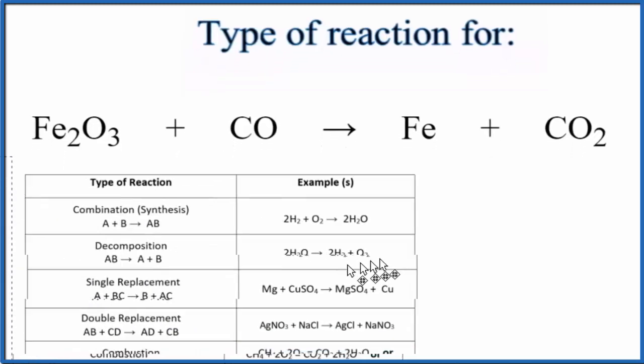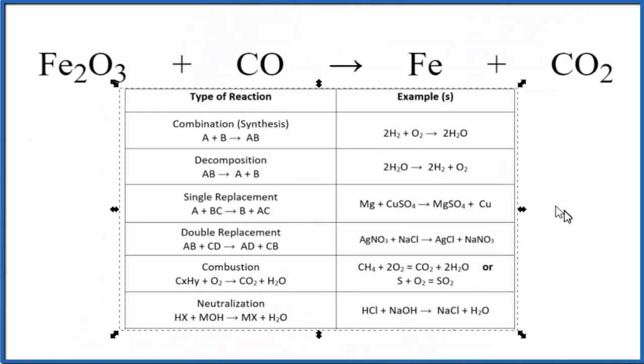Let's take a look at a table of common types of chemical reactions. So when we look down our table, here's our single replacement reaction. And for the single replacement reaction, it follows this format: A plus BC yields B plus AC.